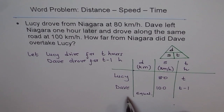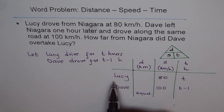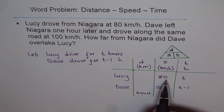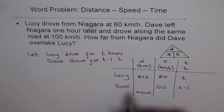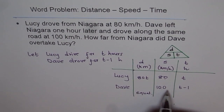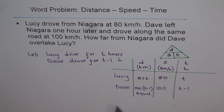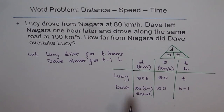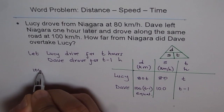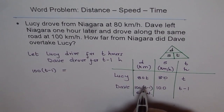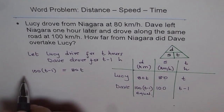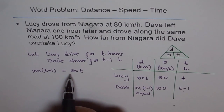Distance equals speed multiplied by time. Lucy will cover 80 times T, so the distance covered by Lucy is 80T. The distance covered by Dave is speed times time: 100 times (T minus 1). Since the distances are equal when Dave overtakes Lucy, we set 100(T − 1) equal to 80T.